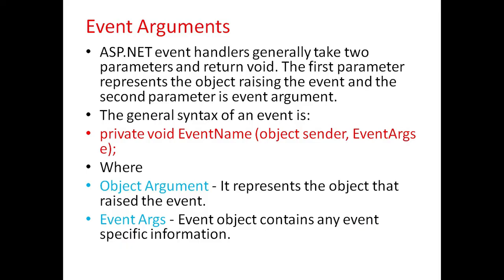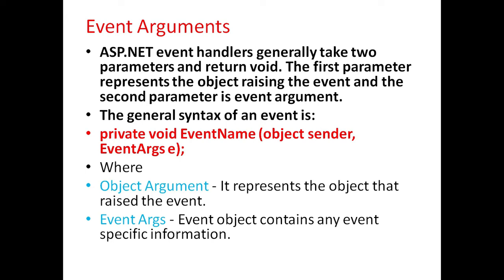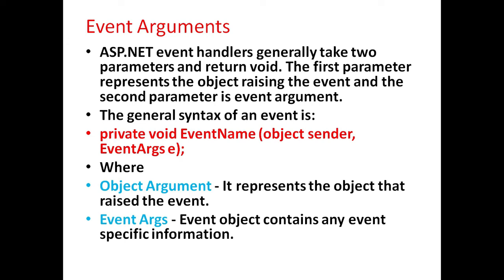Next, we will see event arguments. ASP.NET event handlers generally take two parameters and return void. The first parameter represents the object raising the event and the second parameter is the event argument. General syntax of an event is: private void event_name(object sender, EventArgs e), where the object argument represents the object that raised the event and event argument contains any event-specific information.